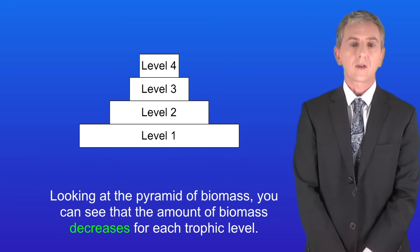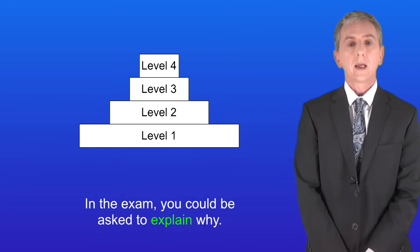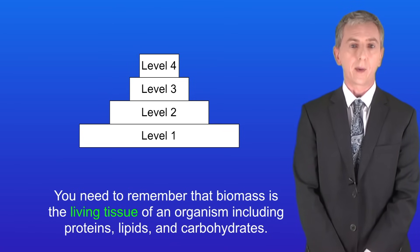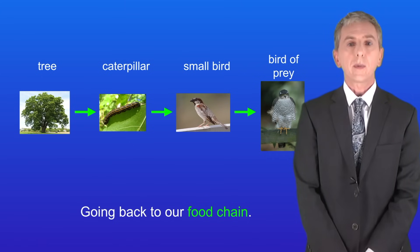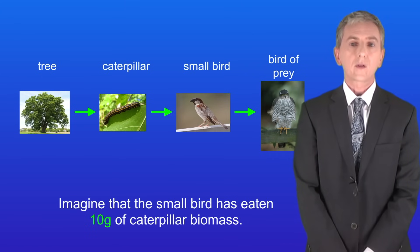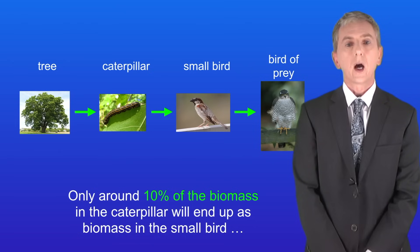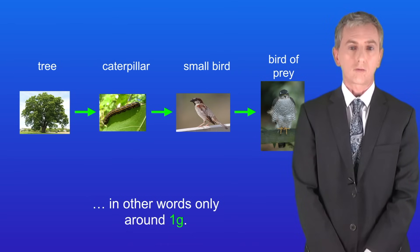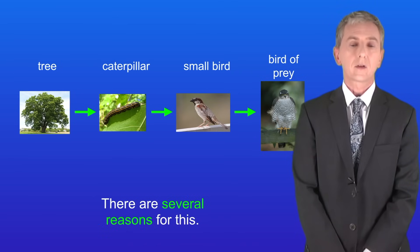Looking at the pyramid of biomass, you can see that the amount of biomass decreases for each trophic level. In the exam you could be asked to explain why. First, remember that biomass is the living tissue of an organism, including proteins, lipids and carbohydrates. Going back to our food chain, imagine the small bird has eaten 10 grams of caterpillar biomass. Only around 10 percent of the biomass in the caterpillar will end up as biomass in the small bird — in other words, only around one gram. There are several reasons for this.